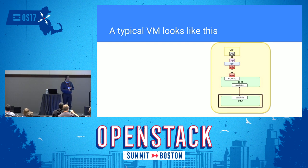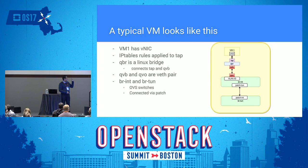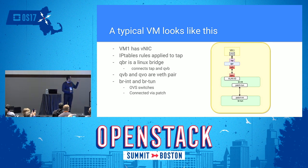Depending on the tunneling type — GRE or VXLAN — the tunneling bridge creates a mesh network of tunnels between this compute host and every other compute host and network host in the environment. To recap: VM has a VNIC; iptables rules are applied to TAP devices to reflect security groups; QBR is a Linux bridge connecting TAP and QVB; QVO and QVB are a VEth pair; the integration and tunneling bridges are OpenVSwitch bridges connected via patch interfaces.